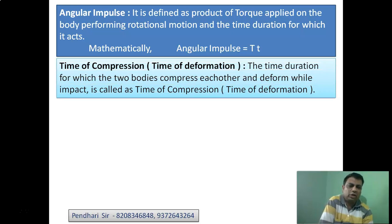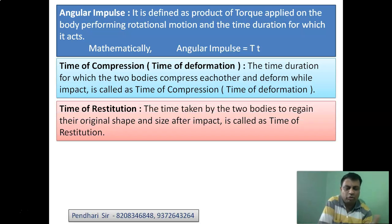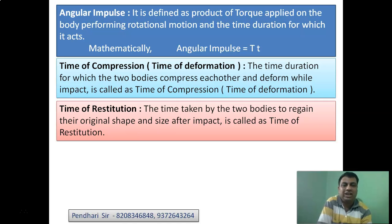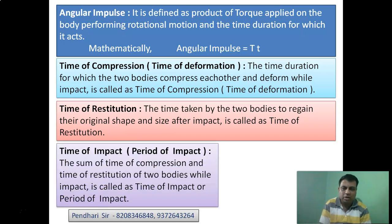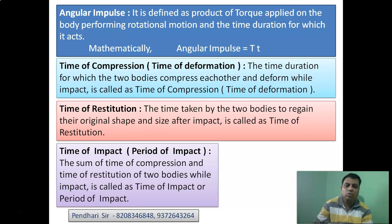Now, time of compression — when two bodies collide, they deform each other, changing shape and size. The time of compression is the time of deformation. When two bodies deform each other, because of the elastic nature of the material, the body tends to recover. The combined time of compression and the time of restitution is called the time of impact or period of impact.